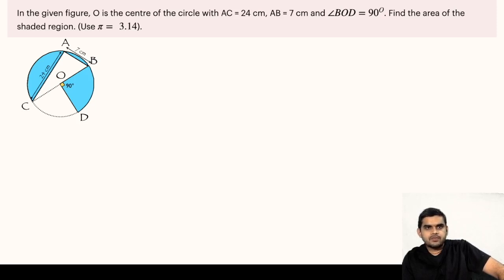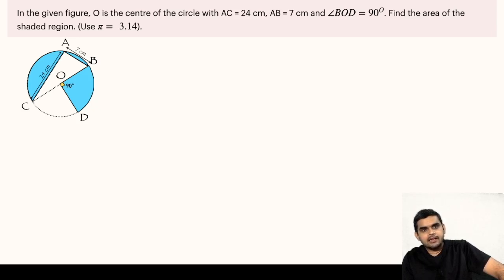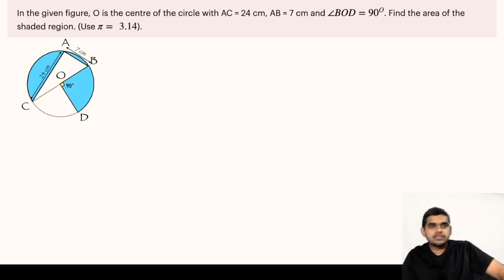In the given figure, O is the center of the circle. Chord AC is equal to 24 centimeters, chord AB is 7 centimeters, and angle BOD is 90 degrees. We have to find the area of the shaded region.